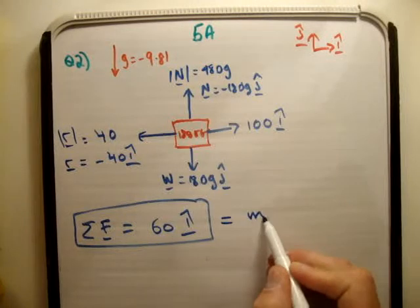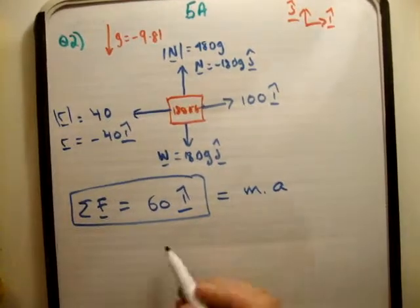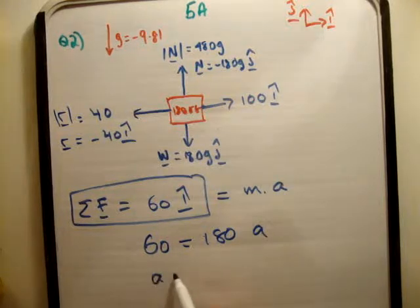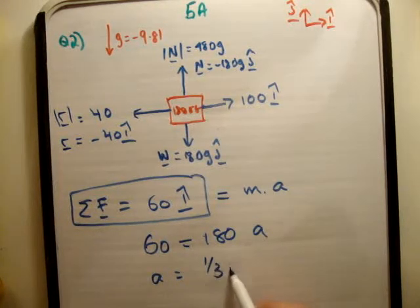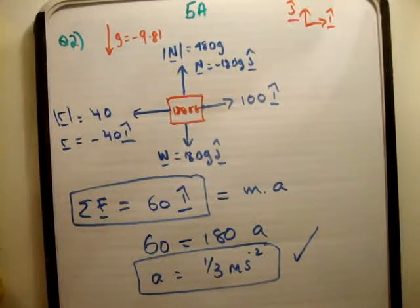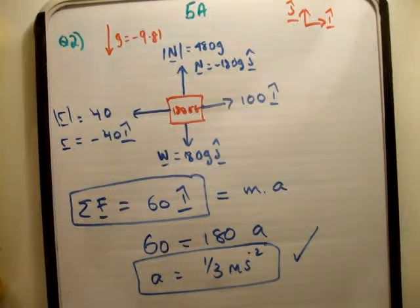But what will matter is that F equals ma. So we're now at 60 equals 180a, and you get a is equal to a third meters per second squared. So it doesn't affect the force, but because the mass has changed, the acceleration must change. So thanks for watching. Please pass it on to your friends, and subscribe to my channel.